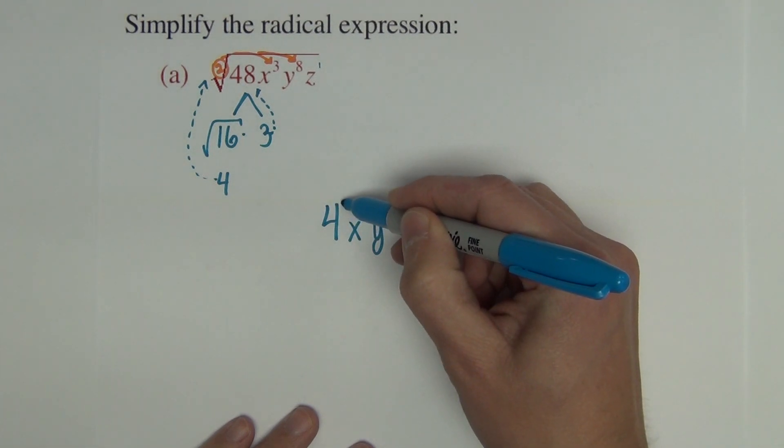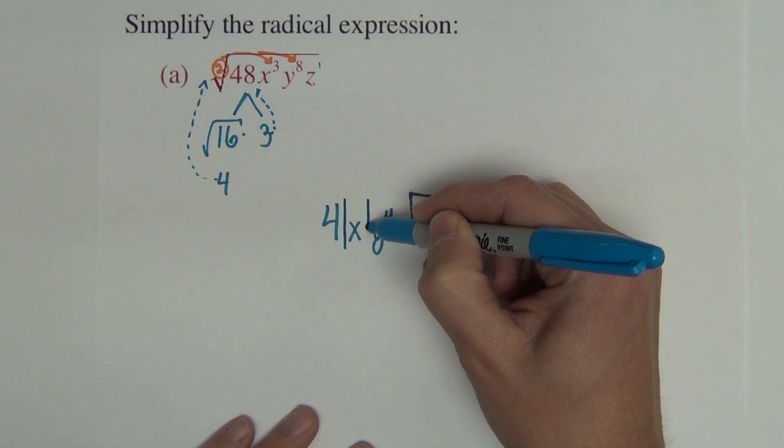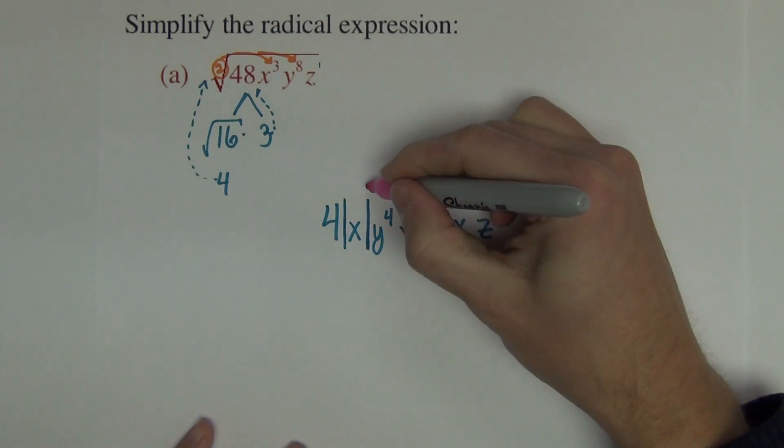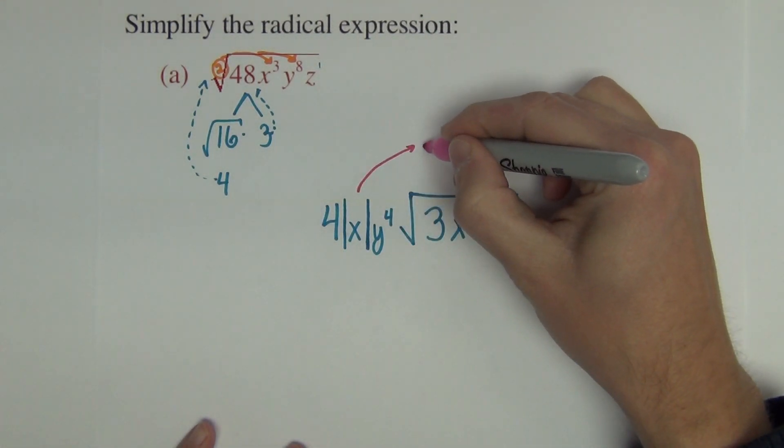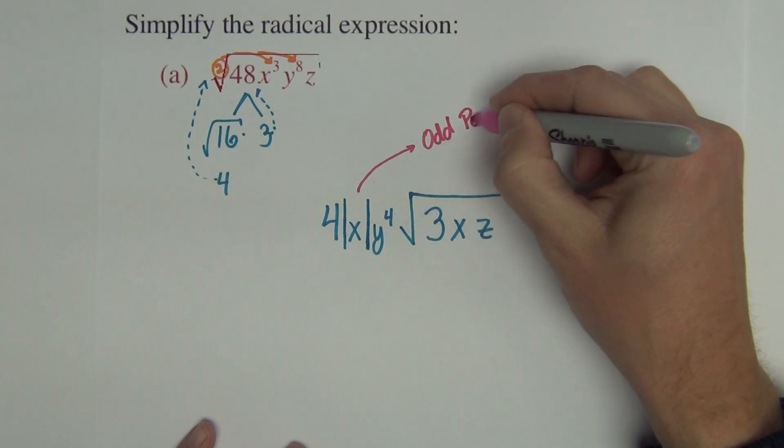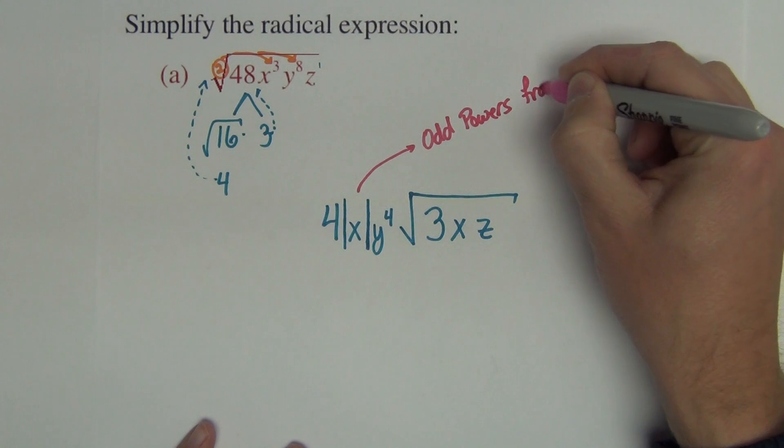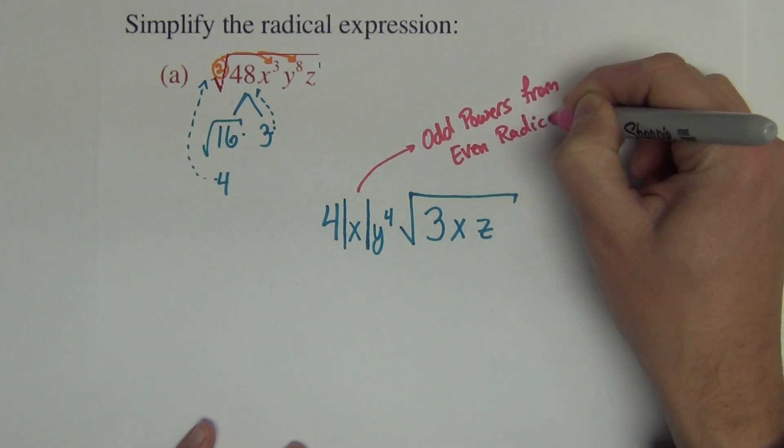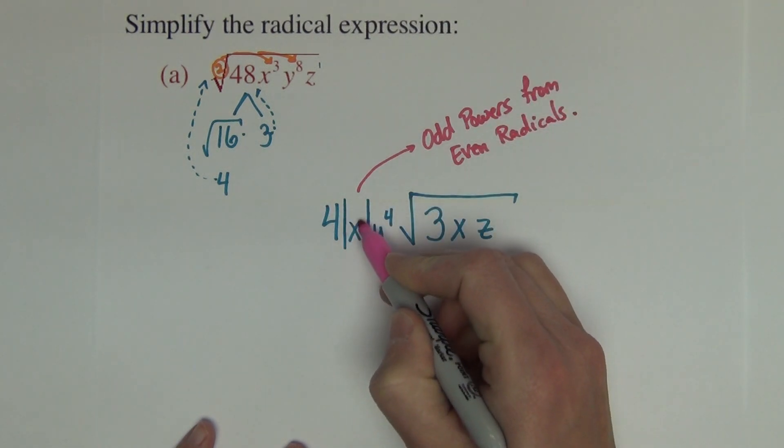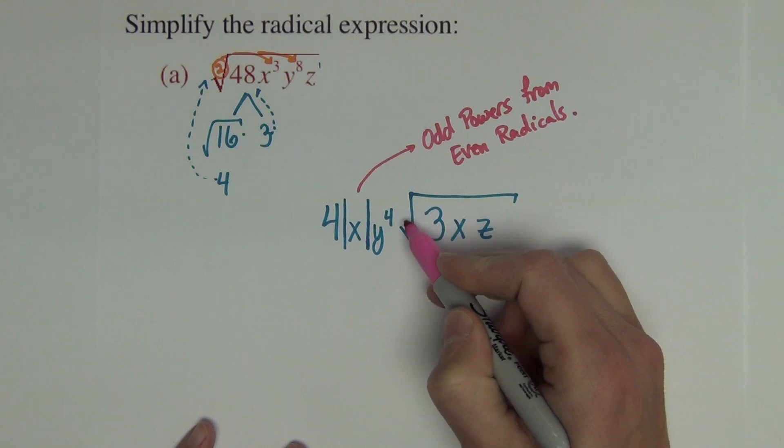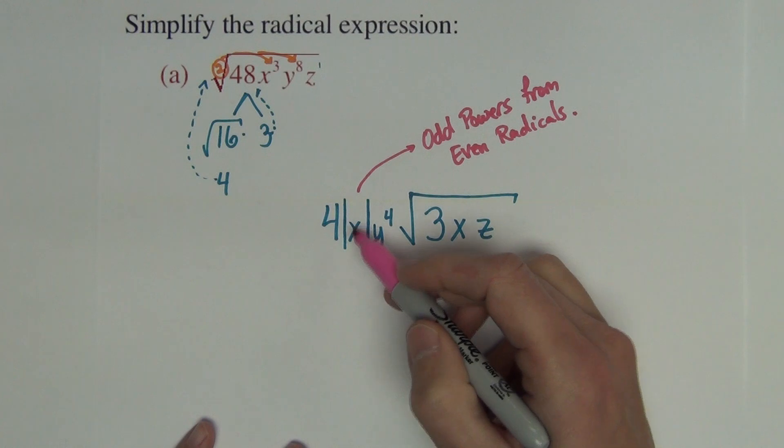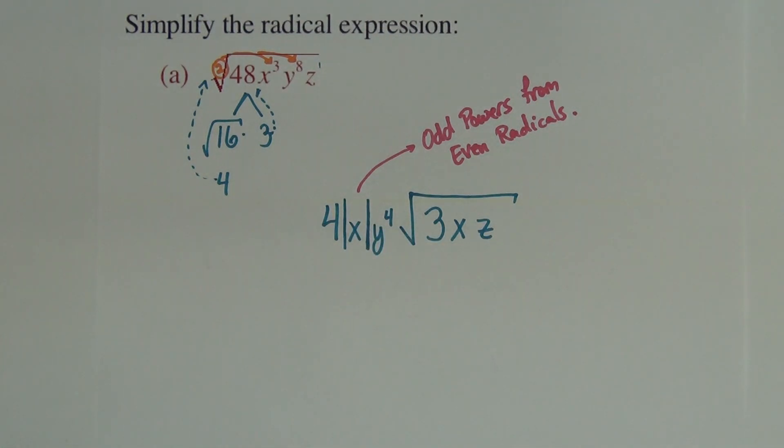One other thing, we're going to put absolute value bars around the x. To preserve the fact that it needs to be positive. And remember the rule is, for the absolute value bars, the rule is odd powers from even radicals. So x to the first, 1 is an odd number. The radical is a square root, which is even. Odd powers from even radicals. We need those variables to represent positive values. So those get absolute value bars.